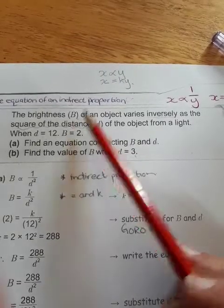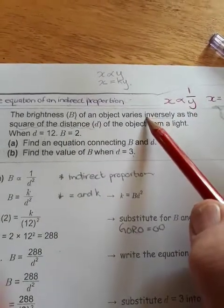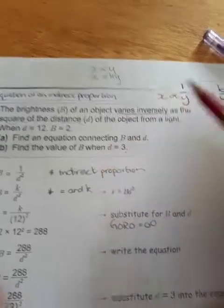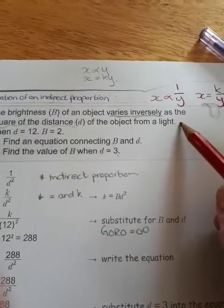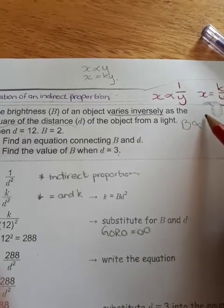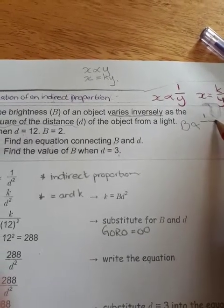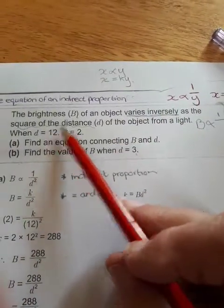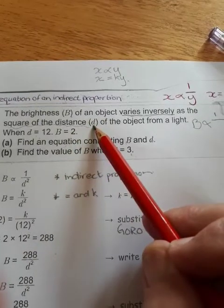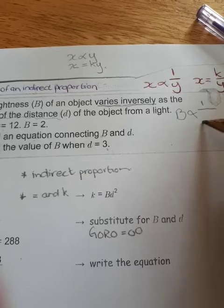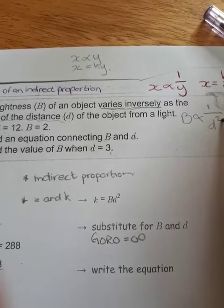Capital B, the brightness, is inversely proportional, varies inversely. So immediately we know that B is inversely proportional means 1 over. That is what the inverse indicates to us. The square of the distance, which is small d. So the distance is squared.